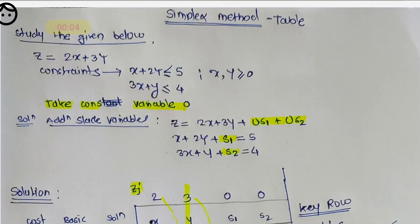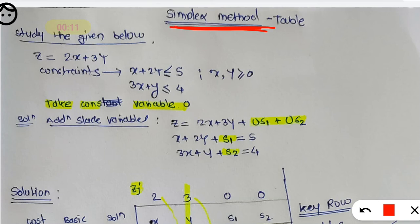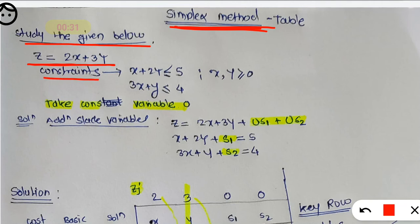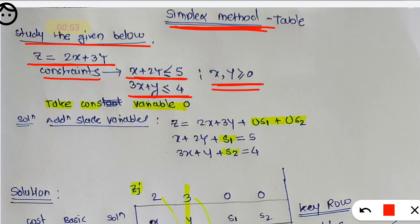Hello friends. Here we will discuss the problem or case study based on the simplex method in linear programming. Now we'll see what and how we should analyze these problems. Let's discuss one problem. The given objective equation is z equals 2x plus 3y. The constraints are: x plus 2y less than or equal to 5, 3x plus y less than or equal to 4, and x, y should be greater than 0. Z equals 2x plus 3y is your objective equation.